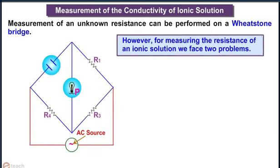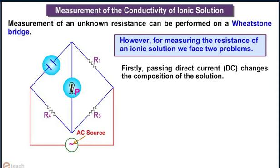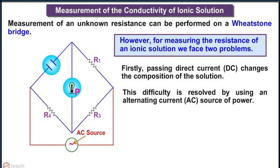However, for measuring the resistance of an ionic solution, we face two problems. Firstly, passing direct current, i.e., DC, changes the composition of the solution. This difficulty is resolved by using an AC source of power.